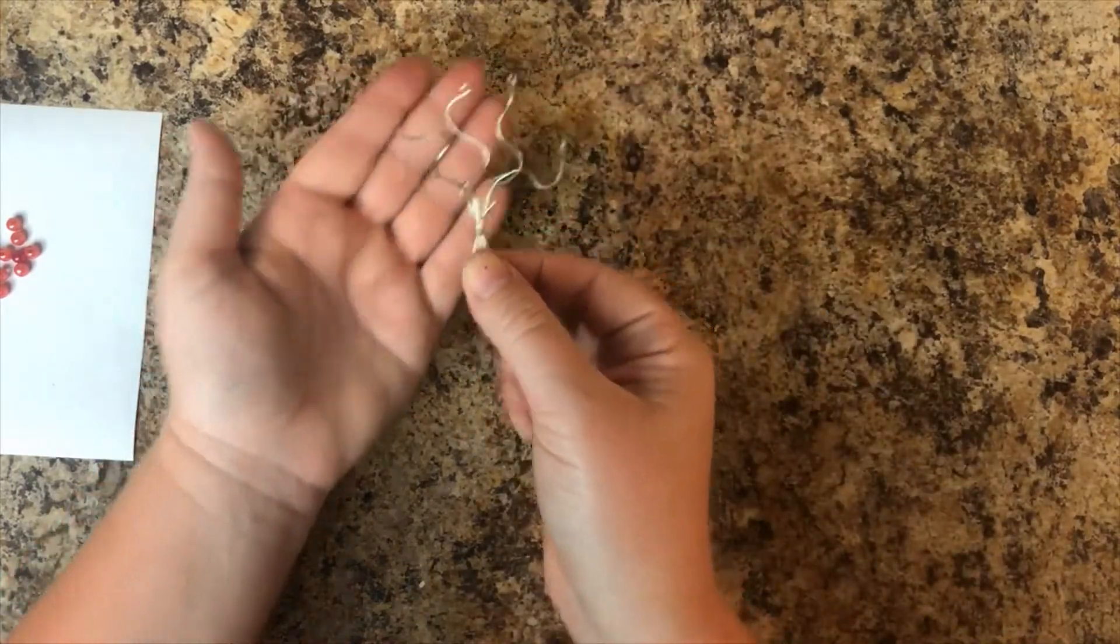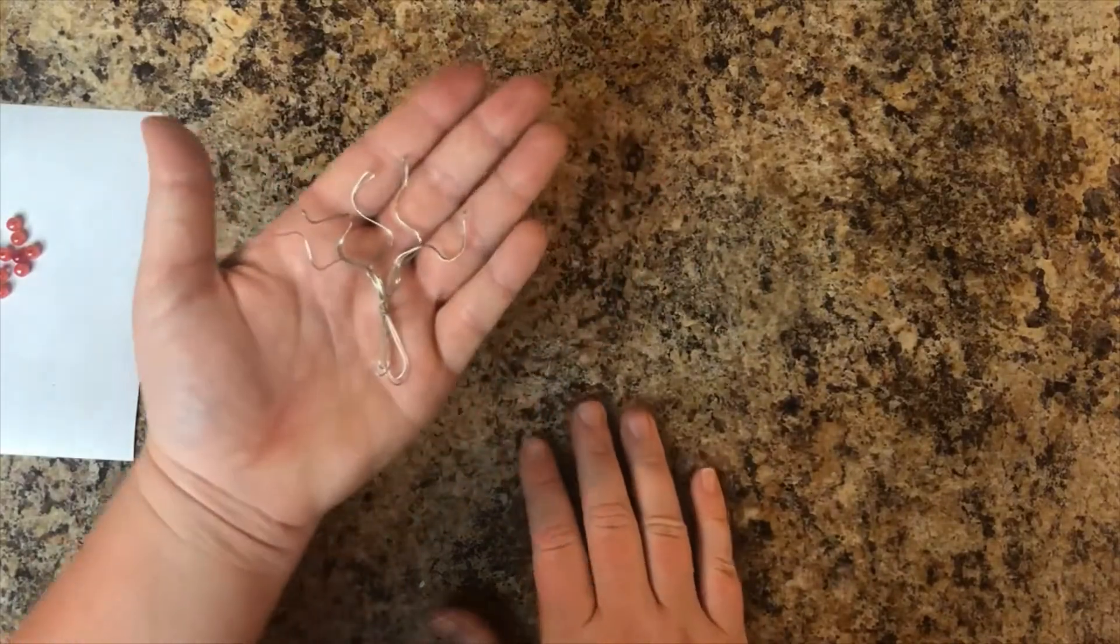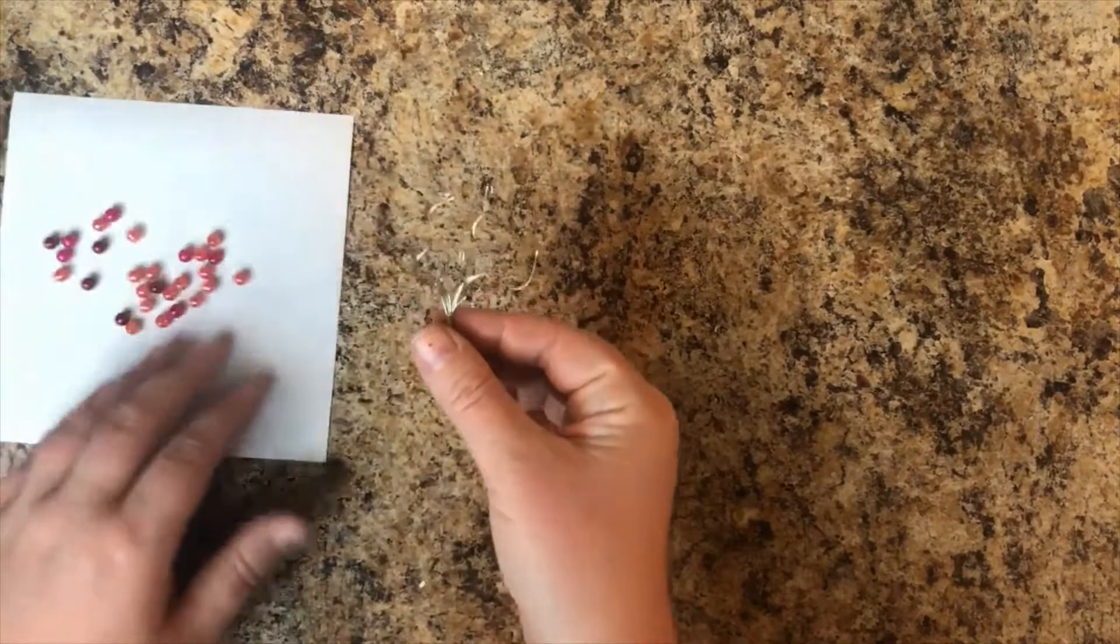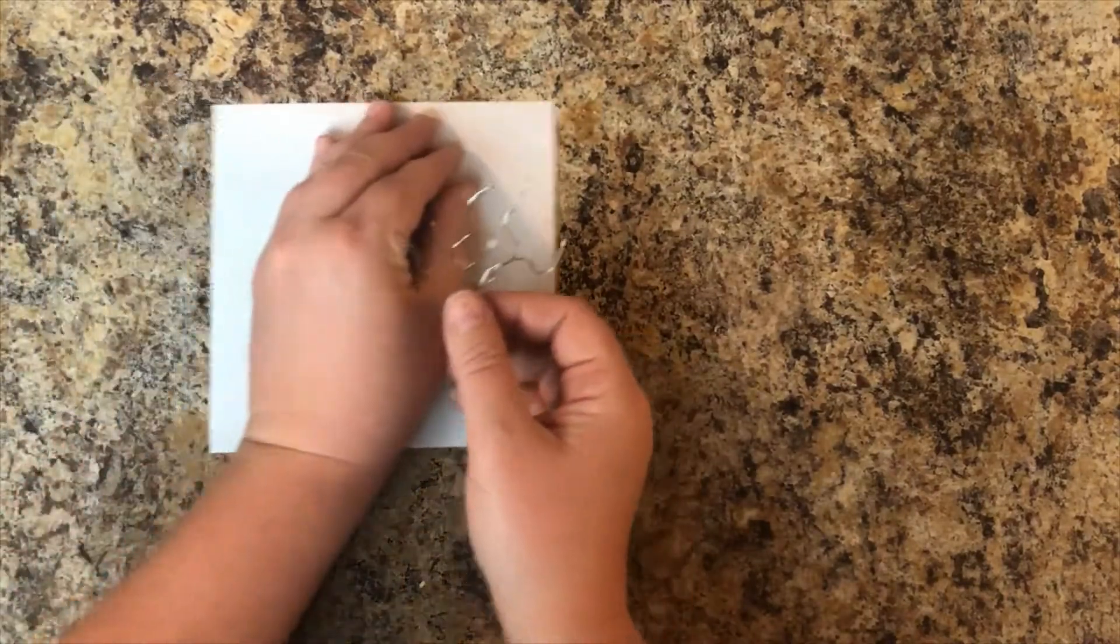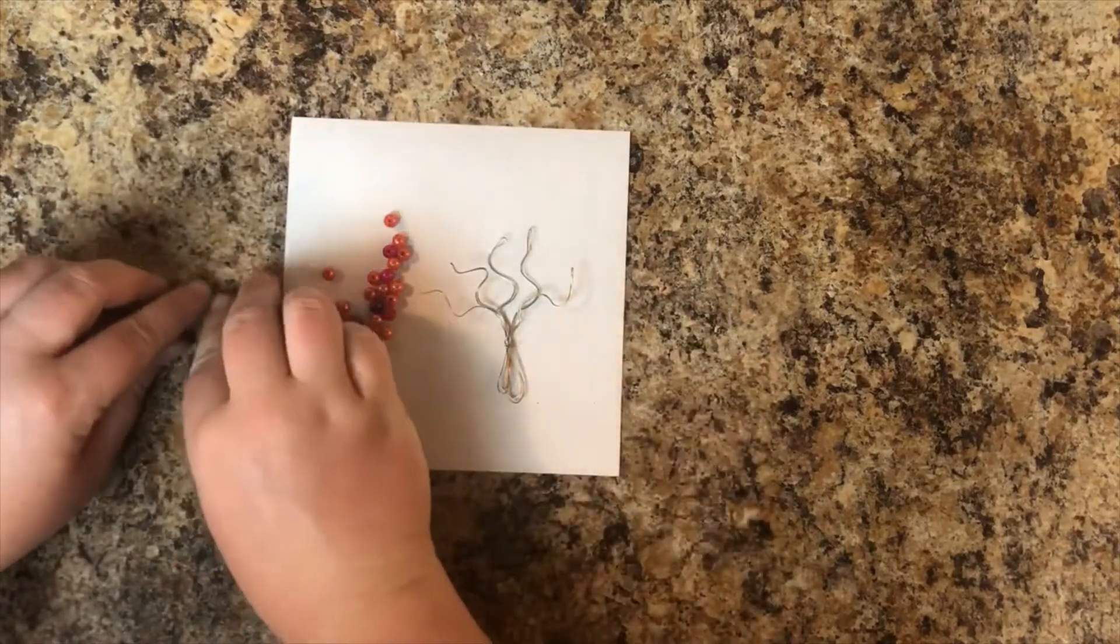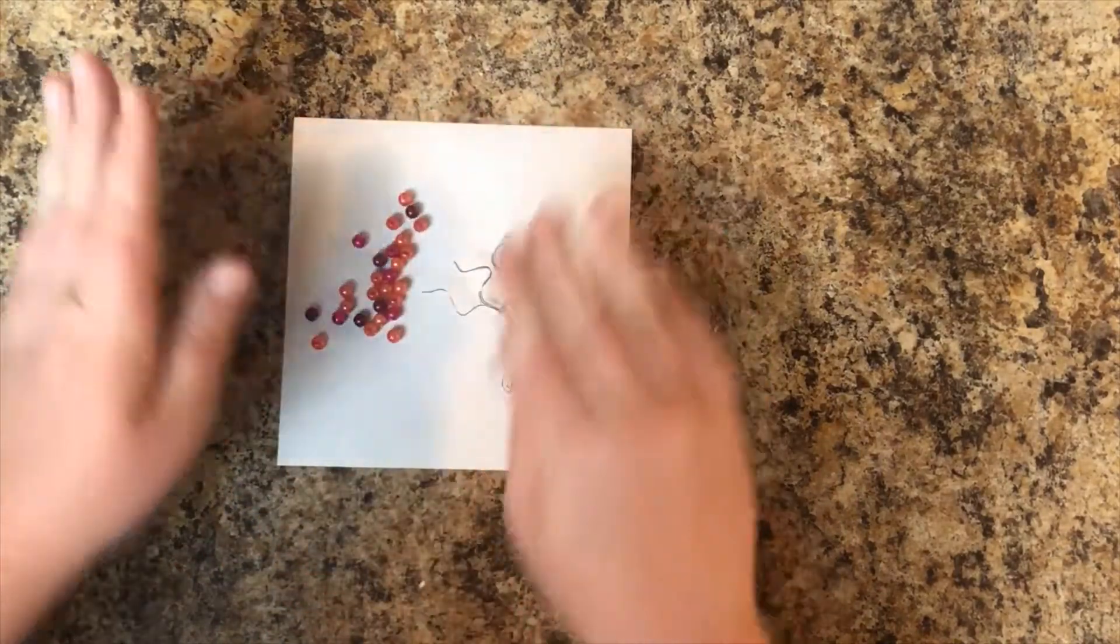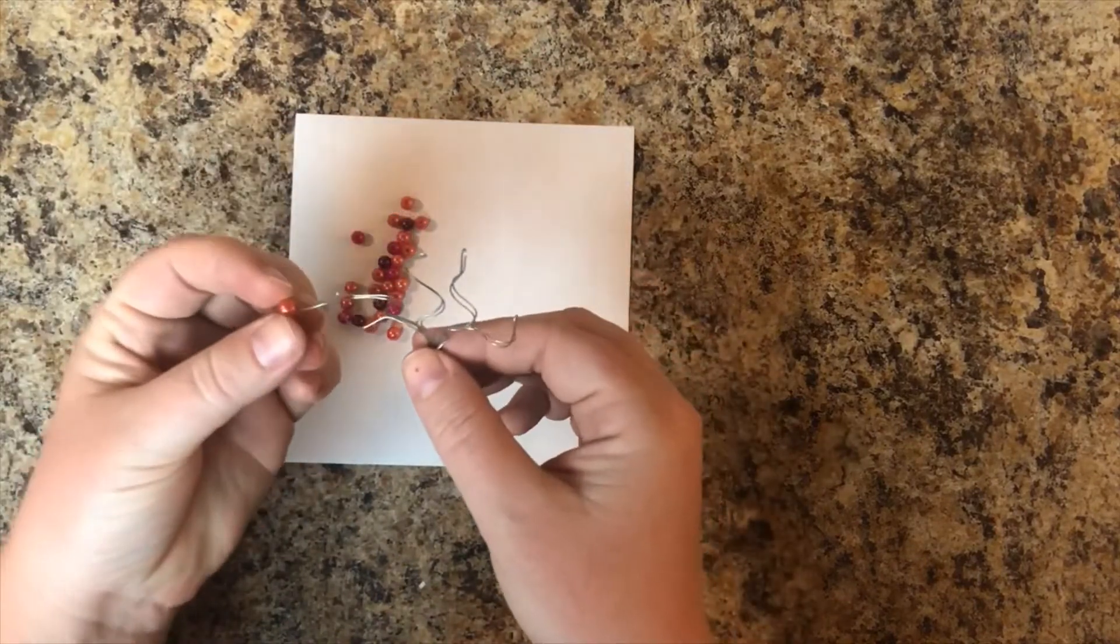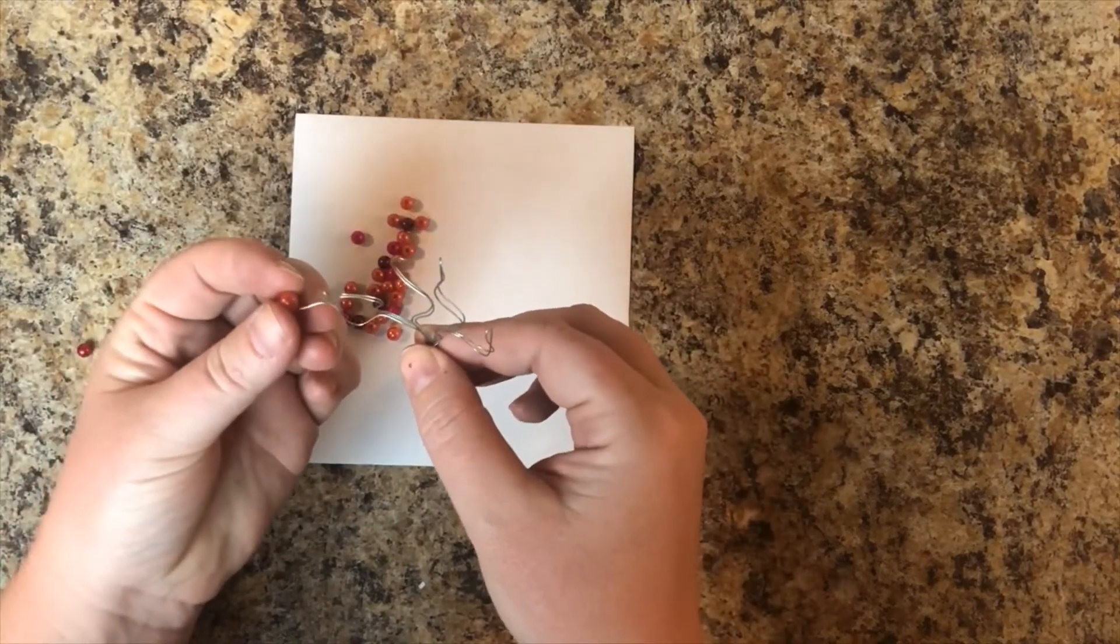Okay, so you should have something kind of like that. It doesn't have to be completely perfect. You're going to kind of mess with it once you put the beads on anyways, so you'll have some room to mess around with how you want it to look. Okay, so we're going to take the first one and you're just going to start placing some beads on.